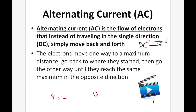The electrons move one way a little bit, then back the other way. As an electron moves to the right, it causes the electron to the right of it to move a little bit, which causes the next electron to move a little bit as well. They have a net zero change in position, but they're still causing the electron beside them to move in the direction of the current.